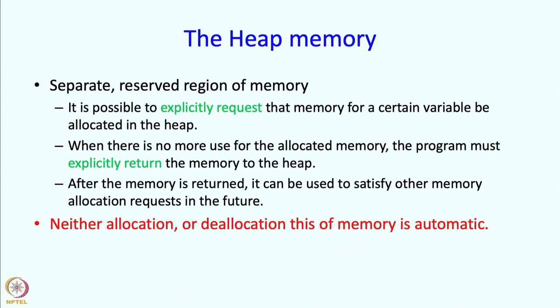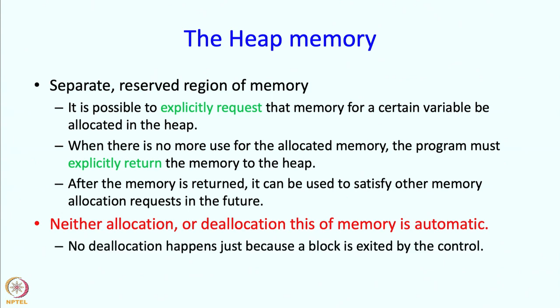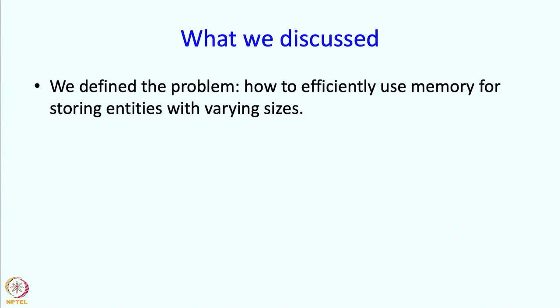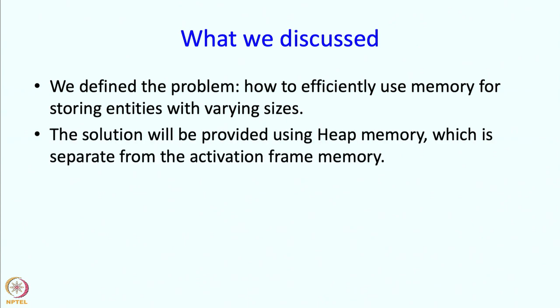There are explicit statements which request memory and explicit statements which return it, so this memory is not automatic in any sense. Even the deallocation is explicit — it does not happen just because a block is exited by control. So to summarize: the problem is how to efficiently use memory for storing entities with varying sizes, and the solution will be provided using heap memory, which is separate from the activation frame memory. Next we are going to talk about how to use the heap memory, but we will take a quick break.